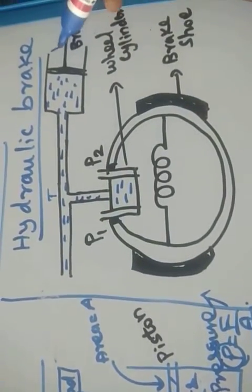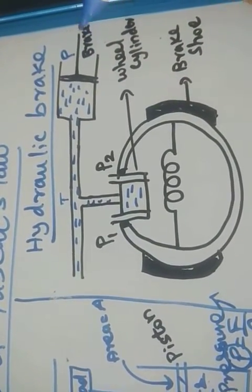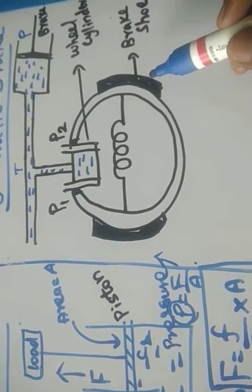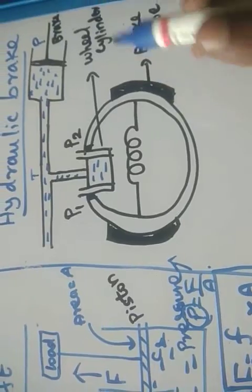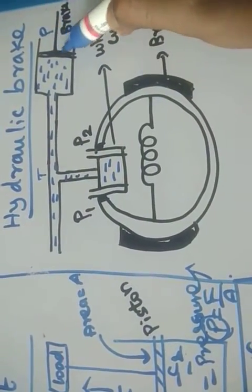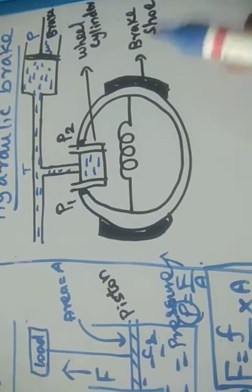One end of this tube is connected to master cylinder fitted with the piston P. So this is a master cylinder piston P where we are giving the brake pedal. The piston P is attached to the brake pedal through the lever system. Here is a lever system.